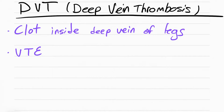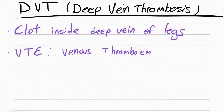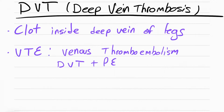Sometimes DVTs are called VTE, but they're not the same thing. VTE actually encompasses DVT. VTE stands for venous thromboembolism, and it includes both a DVT and a PE, which means pulmonary embolism. So both a DVT and a PE are types of venous thromboembolisms.